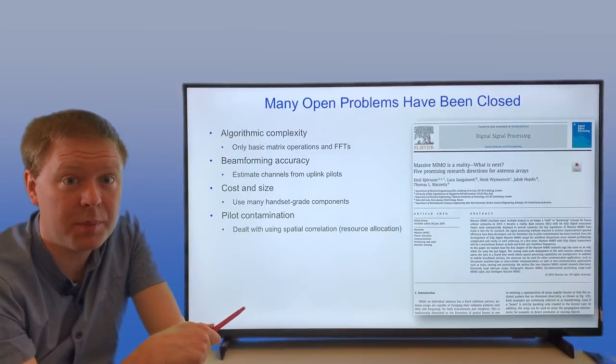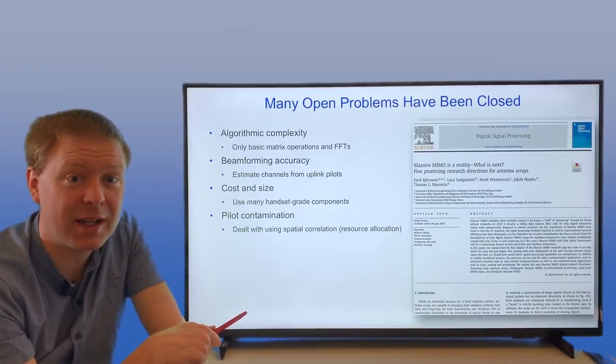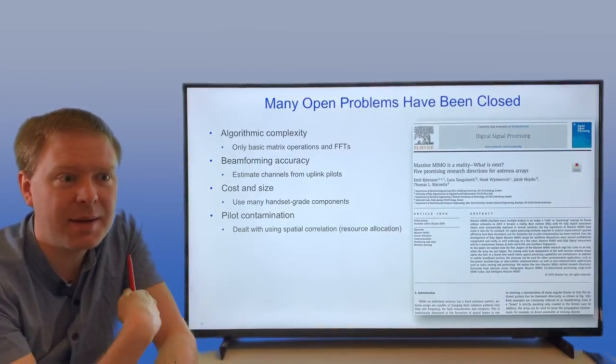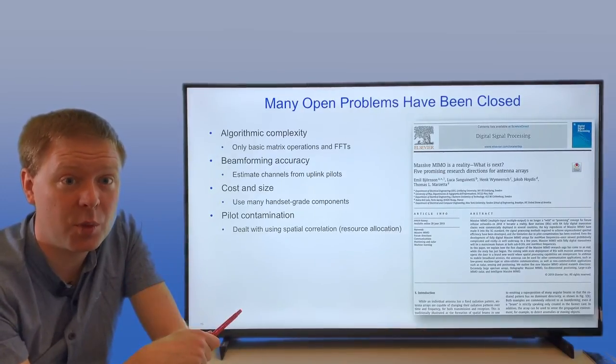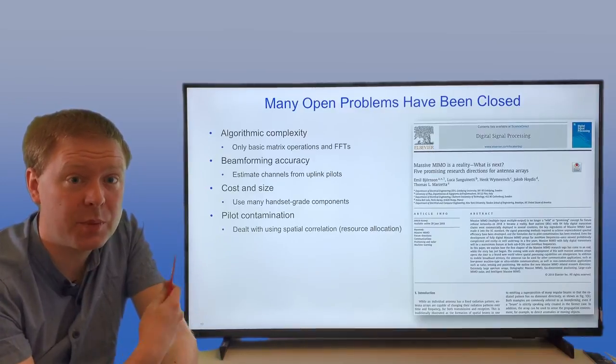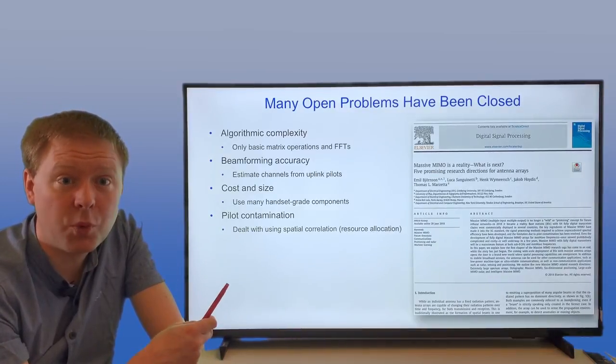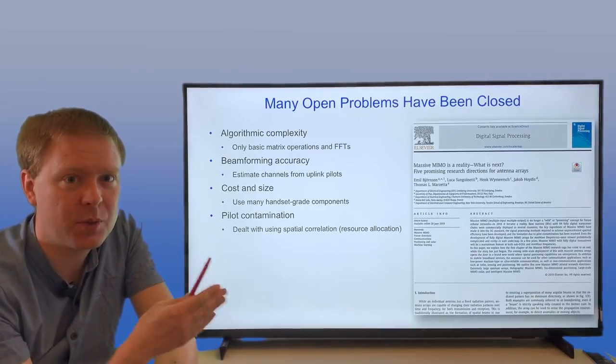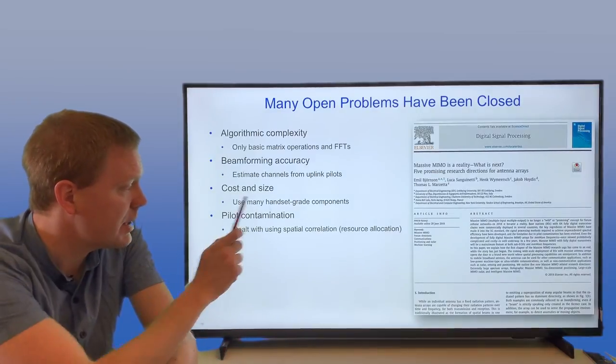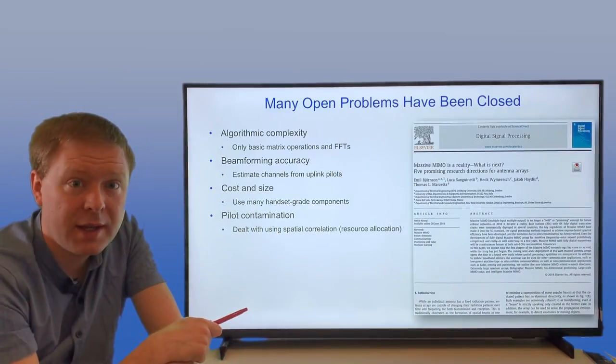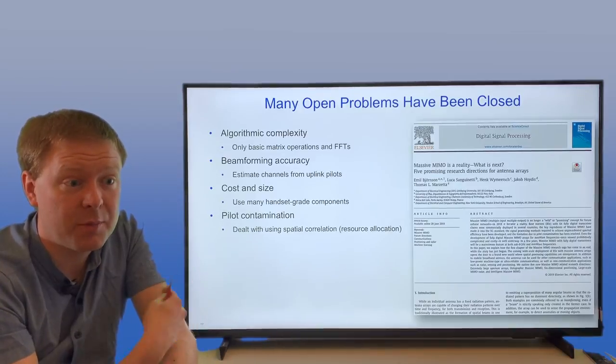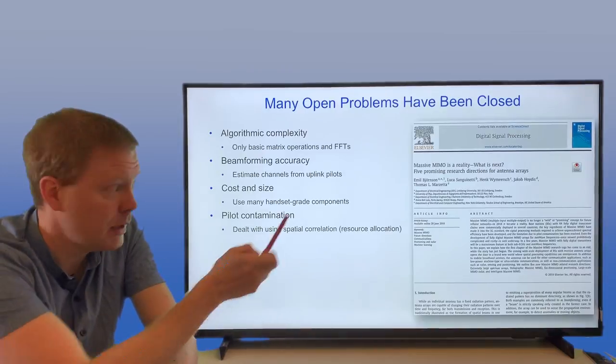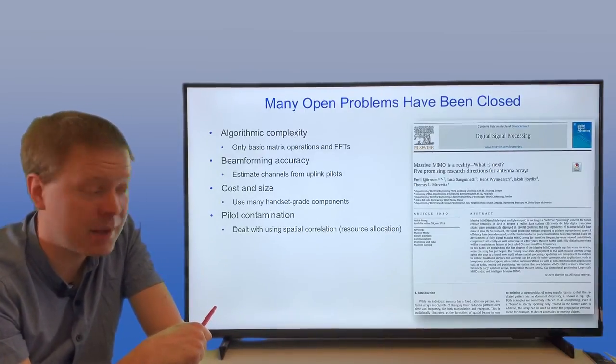Pilot contamination was a problem that had a lot of fuss around it in the beginning of this area. This is about two users at different places that are sending the same pilot sequence at the same time to learn the channels. That is creating some correlation between their channel estimates, and when you're doing beamforming based on those channel estimates, you also happen to send additional interference between the users. But that can be dealt with. You're using so-called spatial correlation to use some side information about how the user channels look like, and that way you can decouple this problem and solve it. It's essentially resource allocation that is dealing with this.